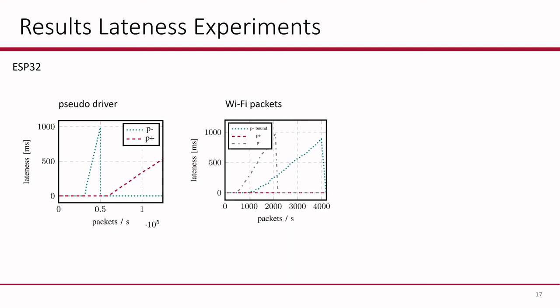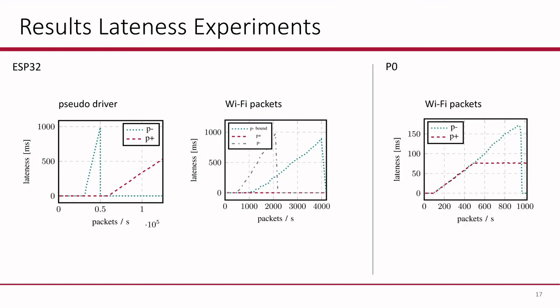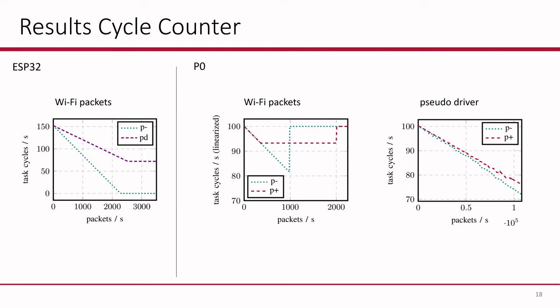However, for the high priority of the observed task — when the observed task cannot be preempted by the Wi-Fi driver — there is no measurable impact, which probably means that the Wi-Fi connection is cut off in that case. For the P0 side, you have very similar results for the high priority, which is shared with the Wi-Fi driver. You see a 50-50 utilization between the driver and the observed task. The cycle counter results are very similar — cycle counts go down for higher packet rates on both the ESP32 and P0. Additionally, for real Wi-Fi packets on the P0, the system actually crashes at some point, and the observed task gets the full CPU again.